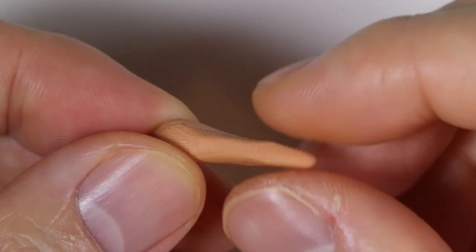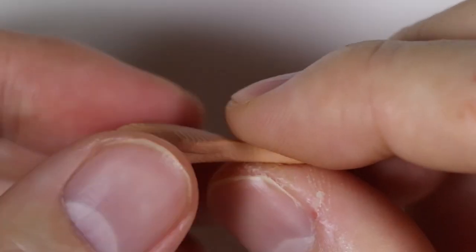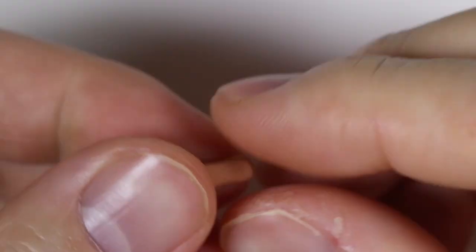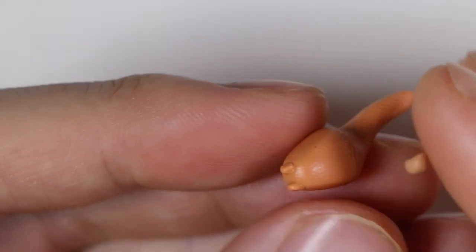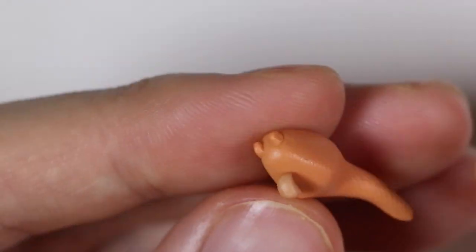Then taking some slightly browner clay, I'm going to pinch it into a rectangular shape, and I'm going to cut off the end. And we're going to place that into the middle of our capybara face.